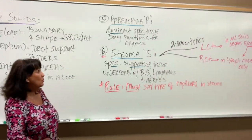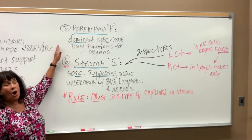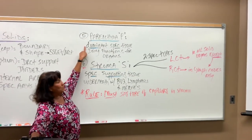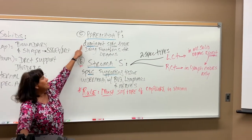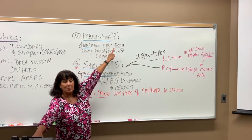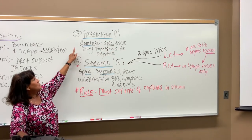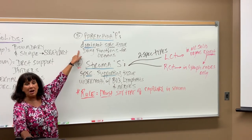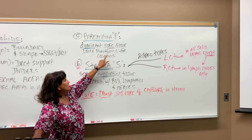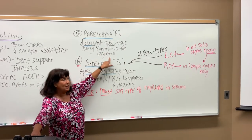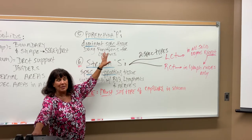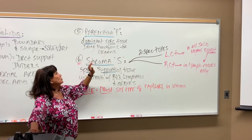Here are the two big words you will hear all the time in A&P one and two. The first one is parenchyma — I usually call it the big P. It's the dominant specific tissue doing the functions for the organ, what it does. You have to name what specific tissue dominates and does all the functions for the organ.